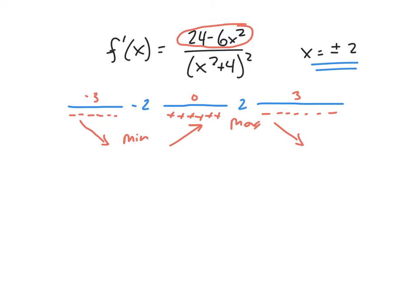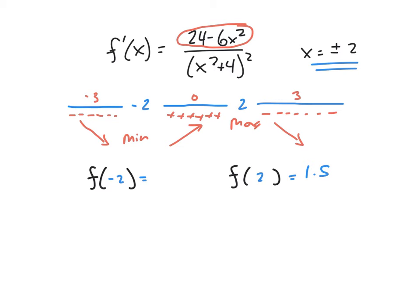Using the first derivative test, we have a local minimum at negative 2 and a local maximum at positive 2. To find the y-values, we plug into the original function. f of 2 gives 12 over 8, which reduces to 3 halves or 1.5. When we plug in negative 2, we get the negative of that, so negative 1.5. We've located a local max at (2, 1.5) and a local min at (negative 2, negative 1.5).